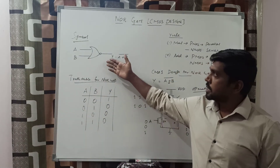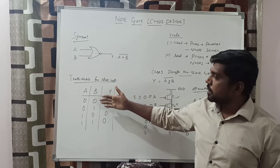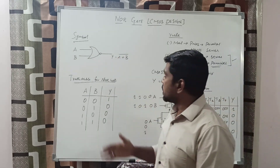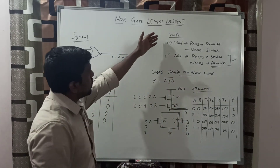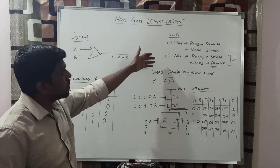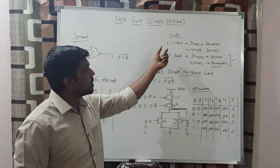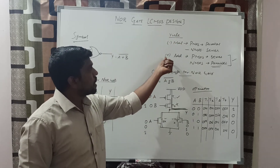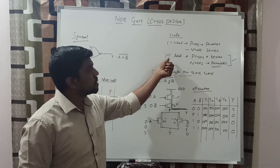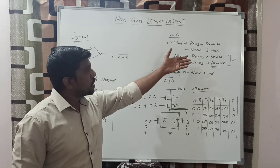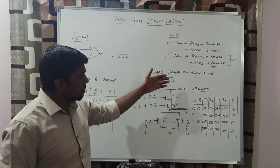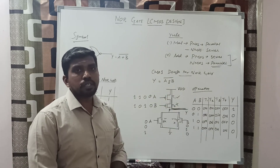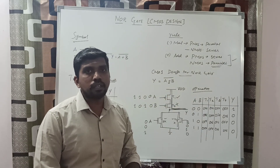First, you draw the symbol, then you write the truth table for the corresponding logical function. For the transformation, you follow these two rules. If the operation is multiplication, you follow rule 1. If the operation is addition (plus), you follow rule 2. Based on the rule, you frame the circuit structure. Then you make a table to verify the operation. Thanks for watching my channel.